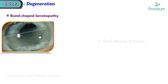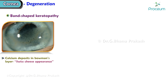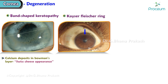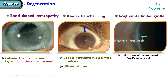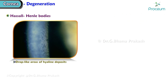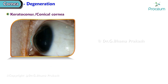Band-shaped keratopathy is caused by calcium deposits in Bowman's layer and gives a Swiss cheese appearance. Kaiser-Fleischer ring is caused by copper deposition in Descemet's membrane and is seen in Wilson's disease. White limbal girdle is an opacity at Bowman's membrane. Hassall-Henle bodies are drop-like areas of hyaline deposits that can form guttata over a long course.